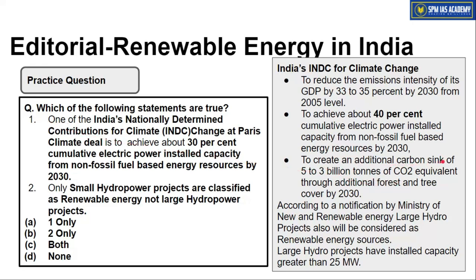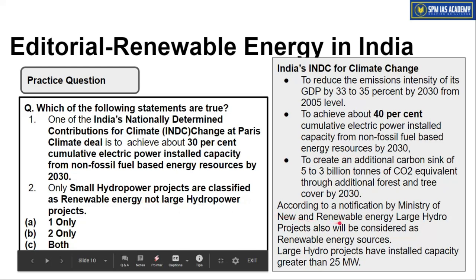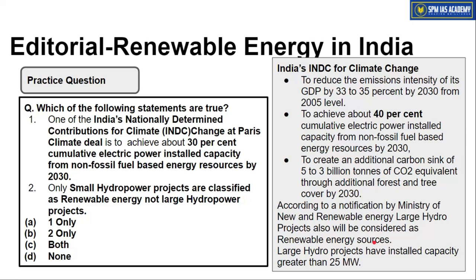India's Paris Climate Deal commitments have three main features: first, reduce emission intensity of GDP by 33–35% by 2030 from 2005 levels; second, achieve about 40% of cumulative electric power installed capacity from non-fossil fuel based energy resources by 2030; and third, create an additional carbon sink of about 2.5 to 3 billion tons of CO2 through additional forest and tree cover by 2030. Regarding Statement 2, according to a recent notification from the Ministry of New and Renewable Energy, large hydro projects are now also considered as renewable energy resources.